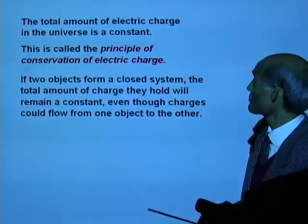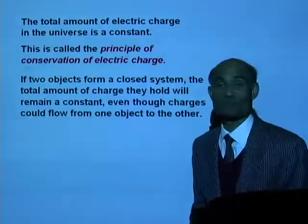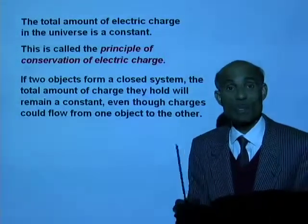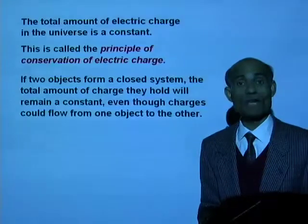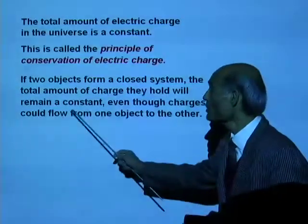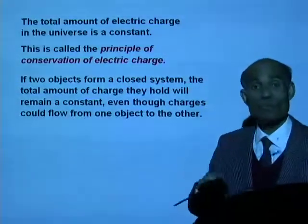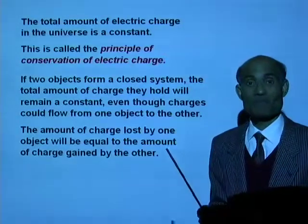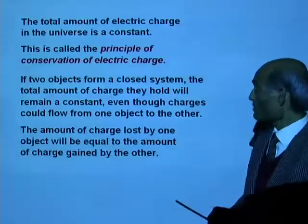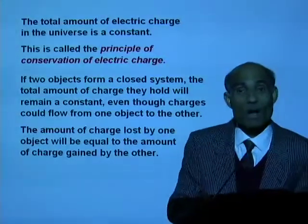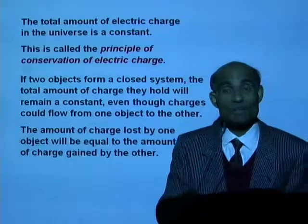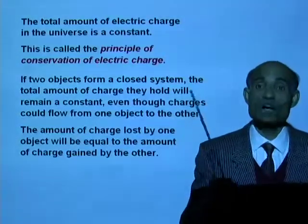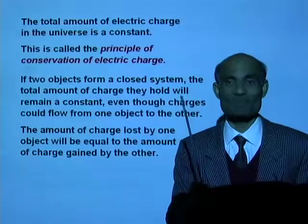If two objects form a closed system, the total amount of charge they hold will remain constant, even though charges could flow from one object to the other. The amount of charge lost by one object will be equal to the amount of charge gained by the other.